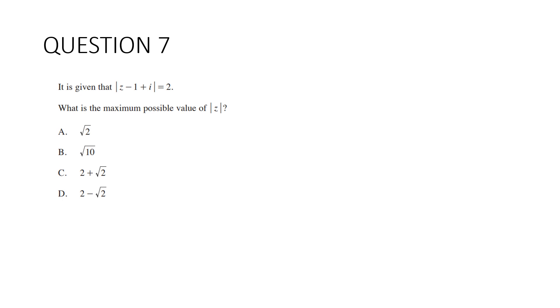Question 7. It is given that the magnitude of z minus 1 plus i equals 2. What is the maximum possible value of the magnitude of z? Let's start by drawing this. It's going to be a circle. Let's rewrite this as z take away (1 minus i). Let's plot this point: 1, negative 1. And the radius is 2. So it comes around like this.